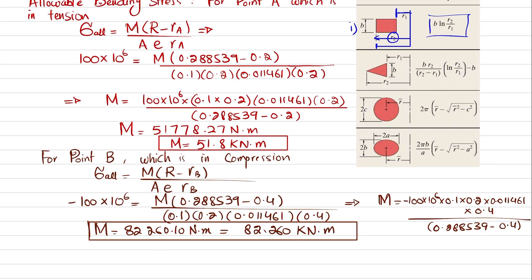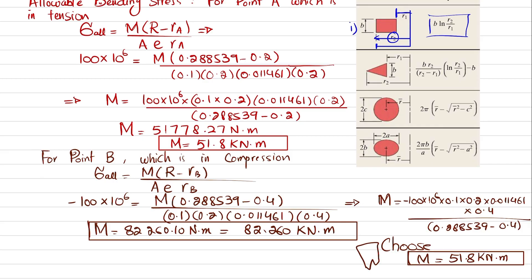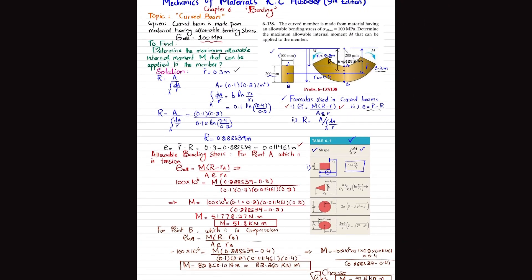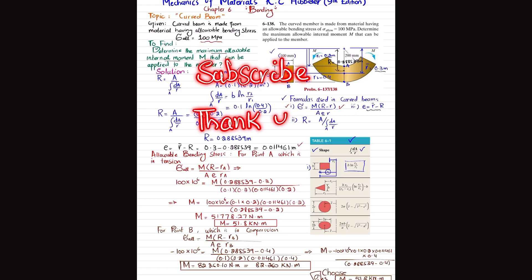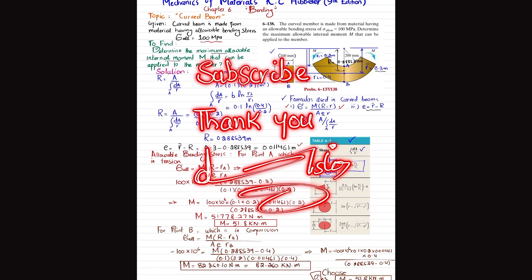We choose the smallest value because it ensures the allowable bending stress is not exceeded at either point. Therefore, the maximum allowable internal moment is M = 51.8 kN·m. That concludes problem 6-138. If you have any questions, ask in the comments, subscribe, and press the bell icon for notifications.